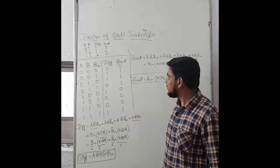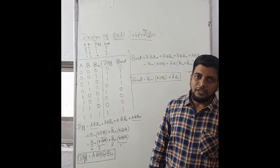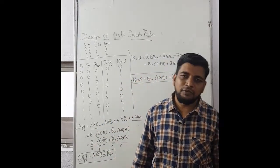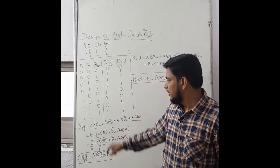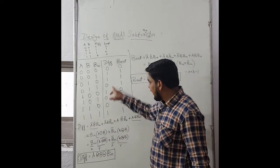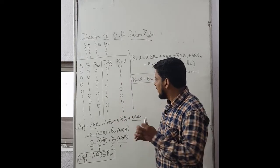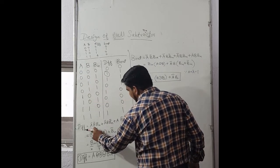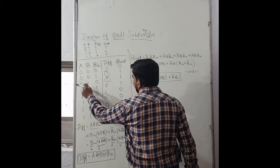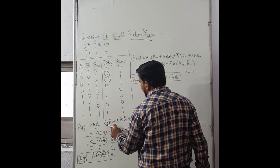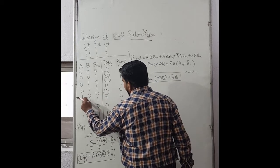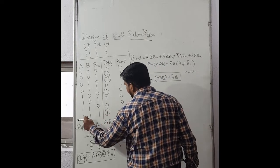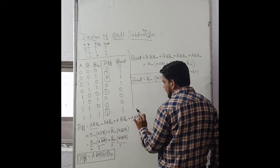The next step is to write the output expression for difference and B_out. For the difference, we consider the rows where the output is 1. The minterms are: A_bar·B_bar·B_in, A_bar·B·B_in_bar, A·B_bar·B_in_bar, and A·B·B_in. These four product terms form the sum-of-products expression for the difference output.